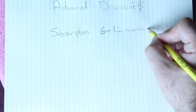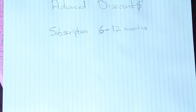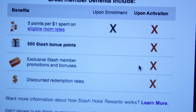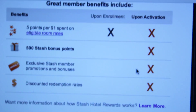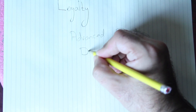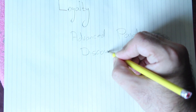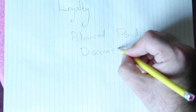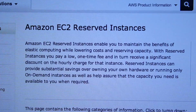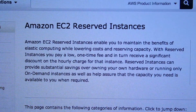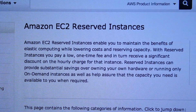If you take out a six or twelve month subscription you can normally get an advanced discount — prepaid pricing works out cheaper than on-demand billing. Alternatively, you can buy into a loyalty scheme, pay more upfront, and receive a greater discount. That's the basis of Amazon's reserved instance model.